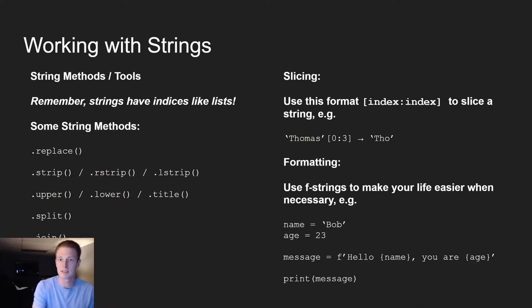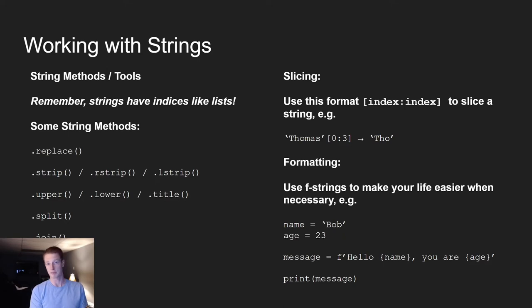Strip removes white space and that kind of stuff — just experiment with it and I'll show you some examples when we're going through the work. Upper, lower, and title uppercase a string, lowercase a string, or give it title case like a proper noun. Dot split splits a string on a specific character, so that's something you'll want to look at. Dot join is another method you'll want to look at on your own. Don't forget that we can slice strings using their indices just like we can use indexes on lists. String formatting is also handy for more challenging work where we need to use variables in our strings — it's easier than concatenation.